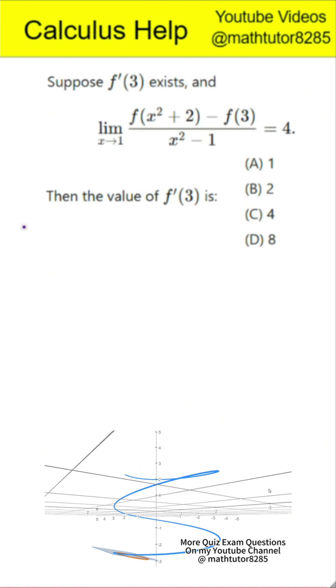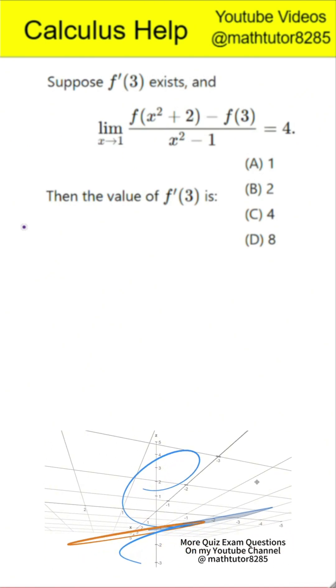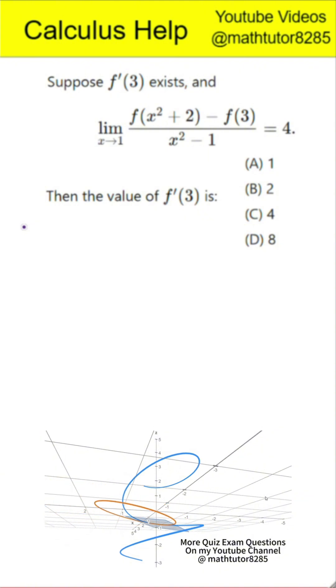Question: Suppose the derivative of f at 3 exists, and the limit as x approaches 1 of the fraction f(x²+2) - f(3) divided by x² - 1 equals 4. Then the value of f'(3) is. There are four options. First step.